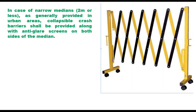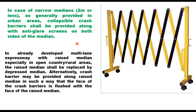In case of narrow medians having width 2 meters or less, as generally provided in urban areas, collapsible crash barrier shall be provided along with anti-glare screens on both sides of the median. In already developed multi-lane highways or expressways with raised median in open country or rural areas, the raised median shall be replaced by depressed median. Alternatively, crash barrier may be provided along the raised median such that the face of the crash barrier is flushed with the face of the raised median.